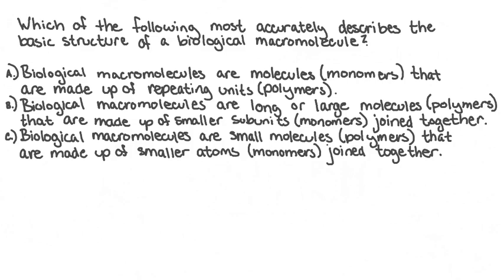Biological macromolecules are long or large molecules or polymers that are made up of smaller subunits or monomers joined together. Biological macromolecules are small molecules or polymers that are made up of smaller atoms or monomers joined together. The correct answer to this question will be the choice that describes the structure of a biological macromolecule. And since we're looking for the choice that does this the most accurately, we're going to need to compare all three answer choices to each other.